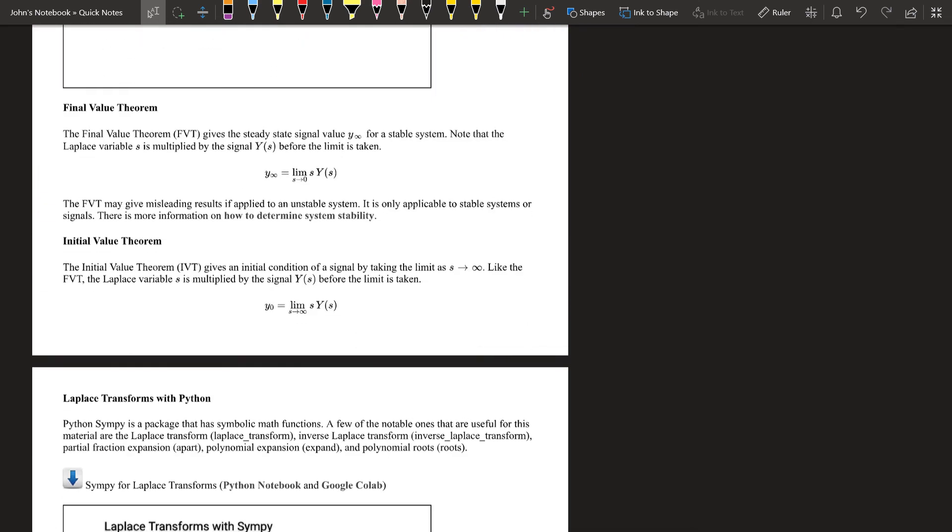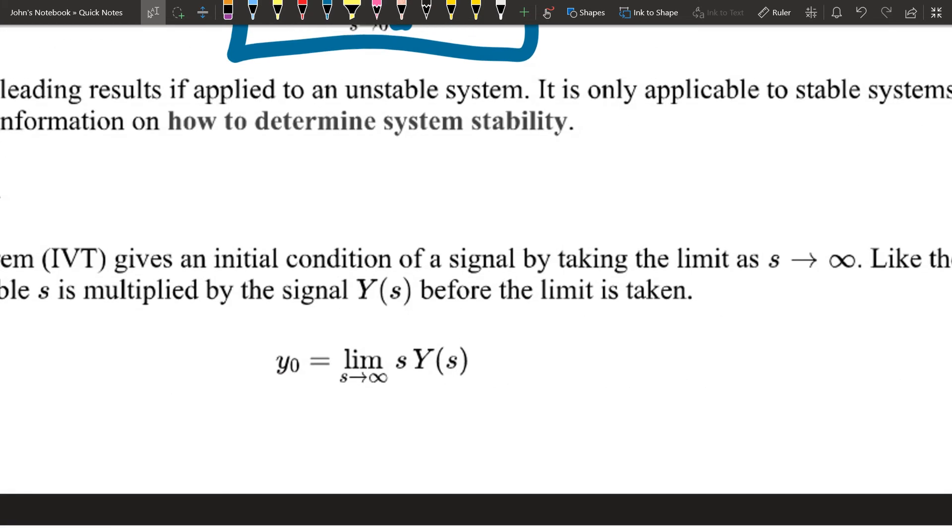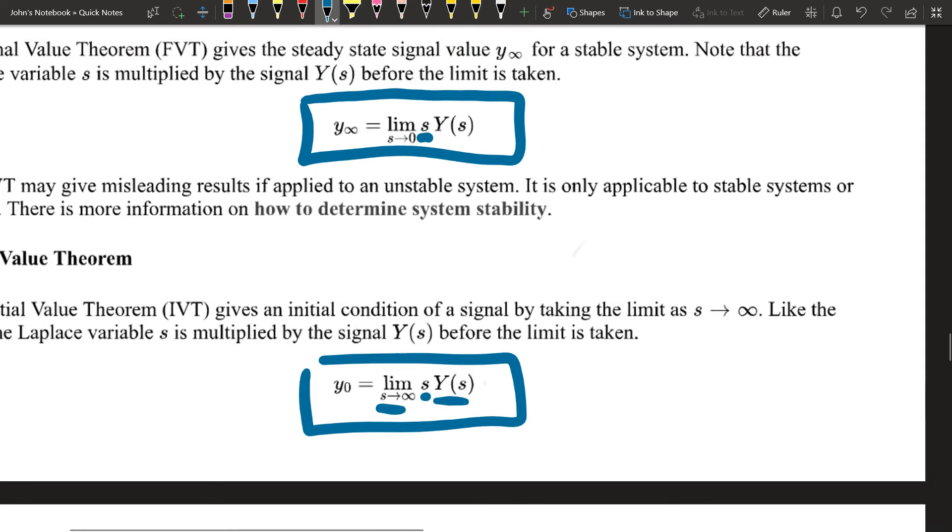Here is the final condition right here. Y infinity, take the limit as s goes to 0, and you have to multiply that signal by s. The initial value theorem is that you have y naught equals limit as s goes to infinity. Then you have to multiply by s and then your signal y. Let's go ahead and do that for both of these.